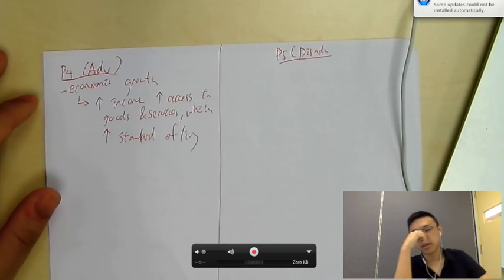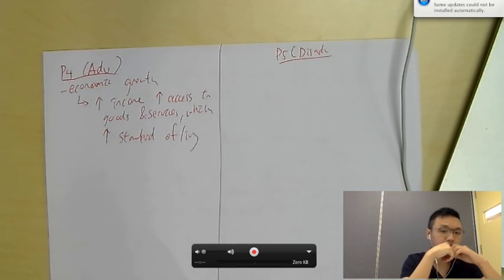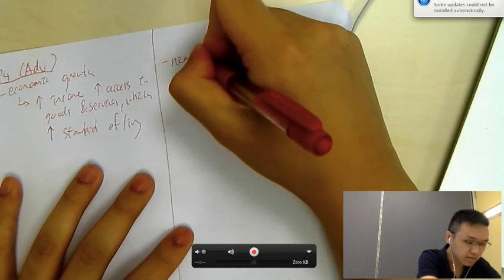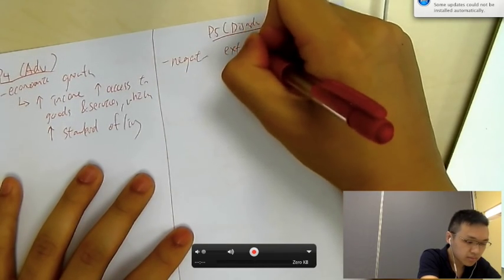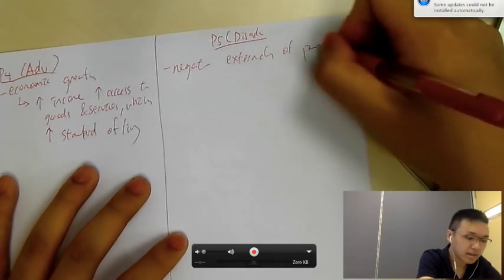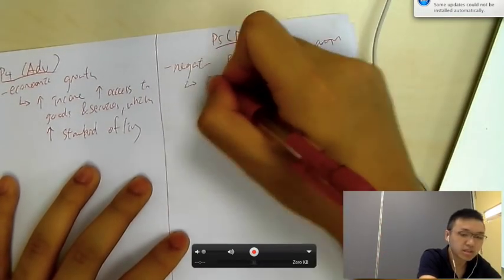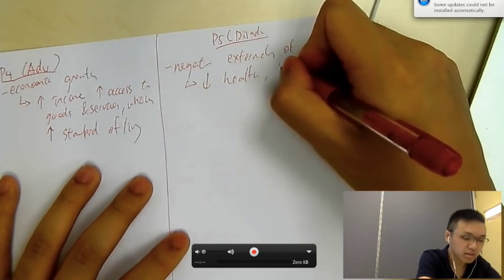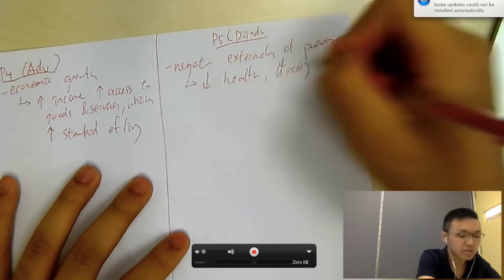And then, another thing you could really talk about is, as I said just now, negative externalities of production. So, why is that bad, negative externalities of production? So, you can say, for example, it depends on the paragraph, but it damages health, right? Which directly decreases standard of living.